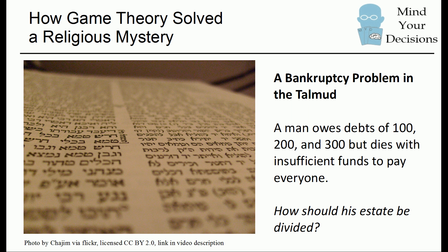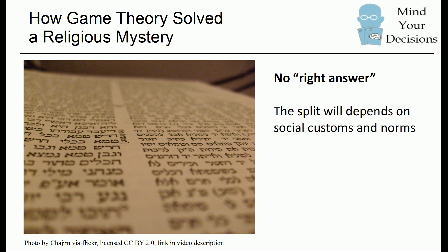Before we get to the answer and how game theory solved it, I just want to take a moment to say there really is no right answer. There's no one way that you can say the estate should be divided. There are many different ways you can divide it — it depends on social customs and norms. When people go to restaurants, that's an example where people order different things and eventually the bill comes. Some people just decide to split the bill evenly; other people decide to split it based on what they ordered. You can even have more intricate arrangements, like splitting the wine evenly but paying for everything else on your own. So there's no right answer.